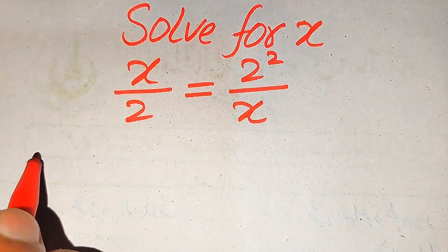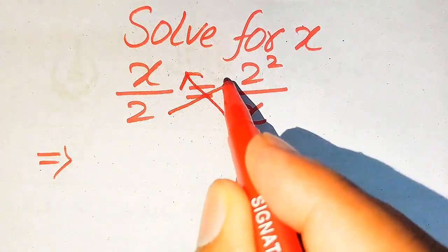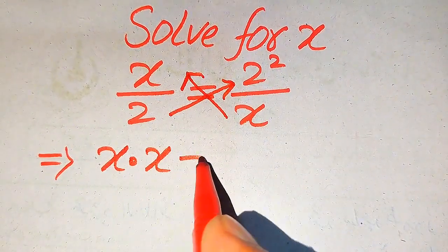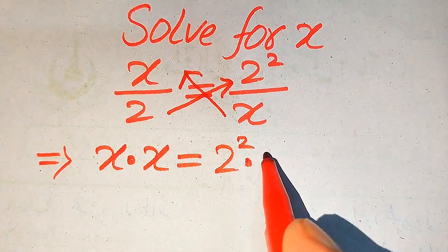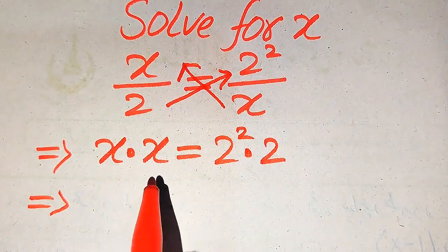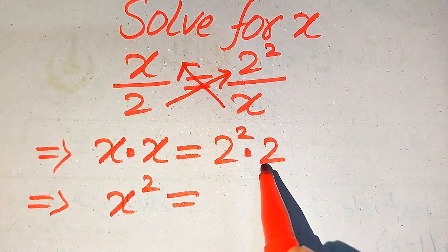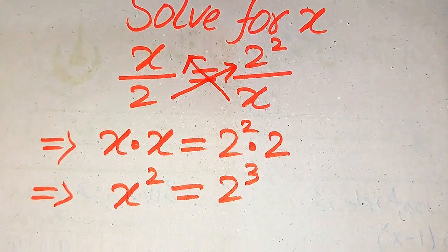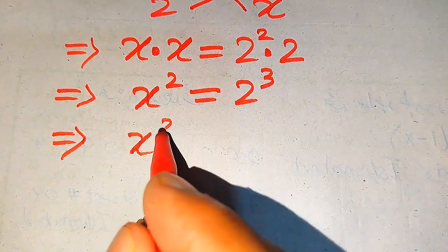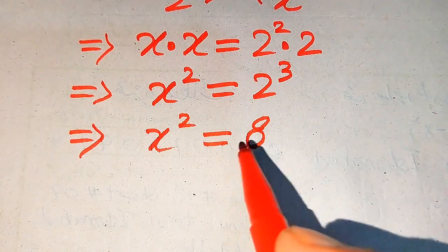First we need to cross multiply the terms. We multiply x with x and we multiply 2 with 2 squared. So x times x equals 2 squared times 2. When x is multiplied by x it becomes x squared, and 2 squared multiplied by 2 equals 2 cubed. We know that 2 cubed equals 8, so x squared equals 8.